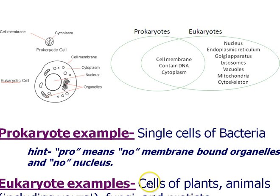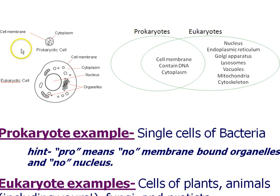Eukaryotes include the cells of plants, animals, fungi, and protists. All multicellular organisms, like plants and animals, as well as most fungi and some protists, are eukaryotic. As you can tell, we have a lot of different organelles inside a eukaryotic cell.